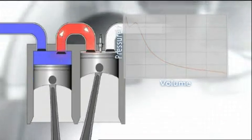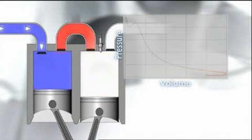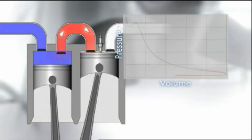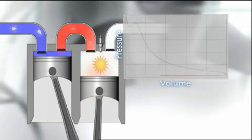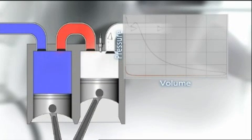The piston reaches the bottom of its stroke, BDC, and the exhaust valve opens. The pressure in the cylinder is now at atmospheric and the exhaust gases are pushed out of the cylinder on the upward stroke of the piston. The piston reaches TDC and the process repeats.